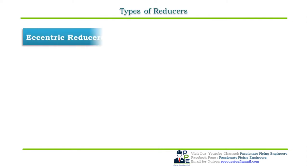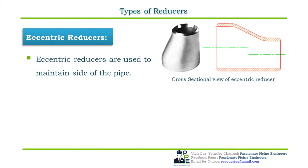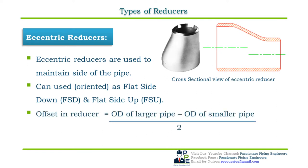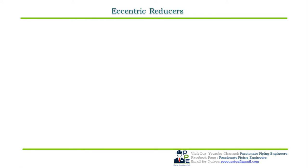Eccentric reducers are used to maintain the side of the pipe. As seen in the cross-sectional view, there are two centerlines — one for the larger diameter and one for the smaller diameter. Eccentric reducers can be oriented as flat side down (FSD) or flat side up (FSU). The offset can be calculated as: offset = (OD of larger diameter pipe − OD of smaller diameter pipe) ÷ 2. The dimensional standard is ASME B16.9.